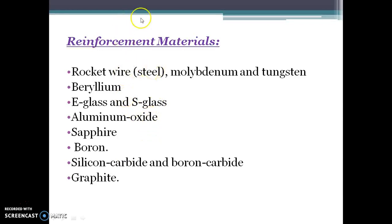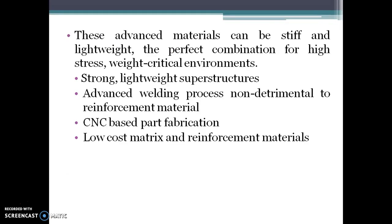The main reinforcement materials used in metal matrix composites are silicon carbide, boron carbide, graphite, aluminum oxide, zinc oxide, boron, E-glass, S-glass, tungsten, and molybdenum, etc. These advanced materials can be stiff and lightweight — the perfect combination for high-strength critical environments, strong lightweight superstructures, advanced welding processes, CNC-based batch fabrication, and low-cost matrix and reinforcement materials.